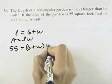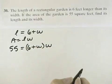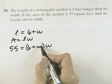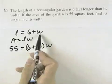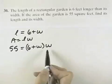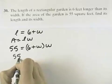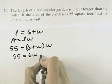And so length times width can be expressed in terms of one variable so that we can solve this equation for the variable W. So we can say that the area equals the length, which is 6 plus W, times the width. So that 55 equals 6W plus W squared.